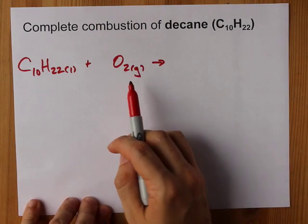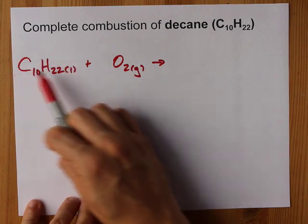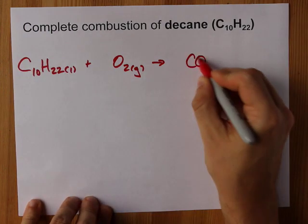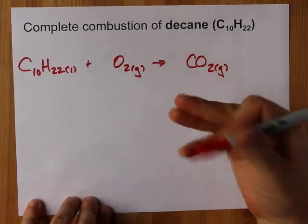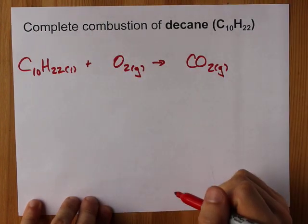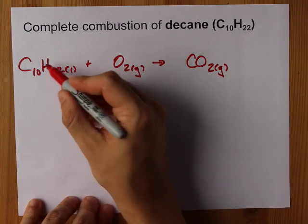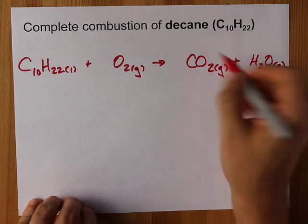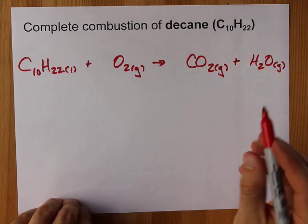What do you get during combustion? The oxides of the stuff you started with. The oxide of carbon is carbon dioxide, CO2. Always for complete combustion, it's CO2. And the oxide of hydrogen is water, H2O. I'm going to say it's a gas because when you burn things they get hot, so it's probably steam.